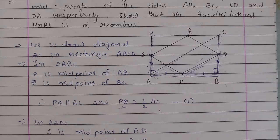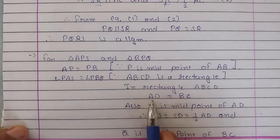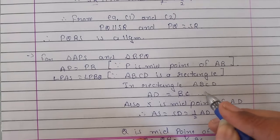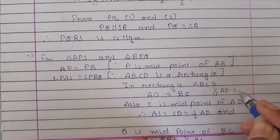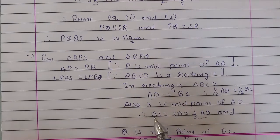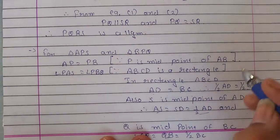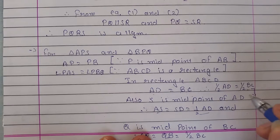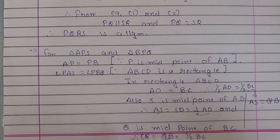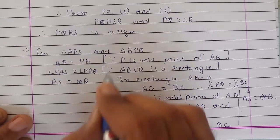That is what we have written. Now, we have already told that AD and BC are equal. Why? Because they are opposite sides of rectangle. That means half of AD will be equal to half of BC. But half of AD is AS, or half of BC is QB. Therefore, from this, we can write that AS is equal to QB. This is the reason.